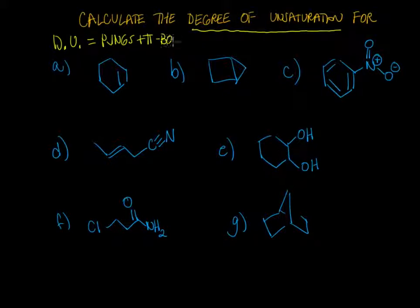So all we need to do here is count up the number of rings and count up the number of pi bonds. You can think of using a pair of scissors to cut this molecule into pieces. There's one pi bond here, and then there's one ring, so the total here is two.